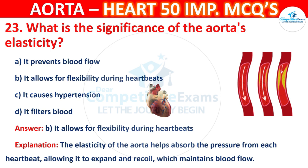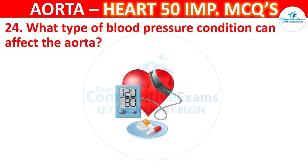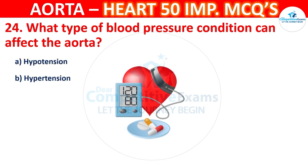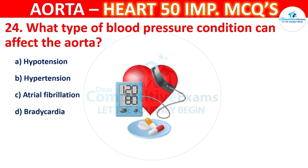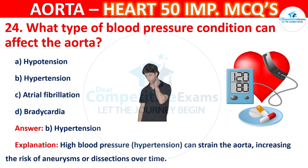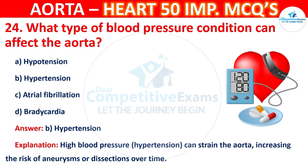Question number 24: What type of blood pressure condition can affect the aorta? Options are hypotension, hypertension, atrial fibrillation, or bradycardia. The correct answer is B — hypertension. High blood pressure can strain the aorta, increasing the risk of aneurysms or dissection over time.